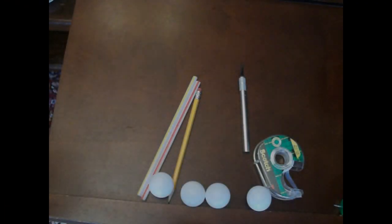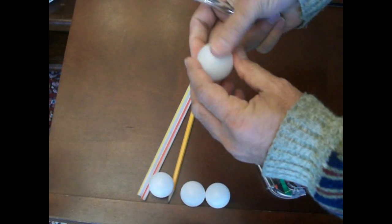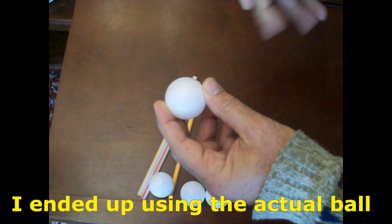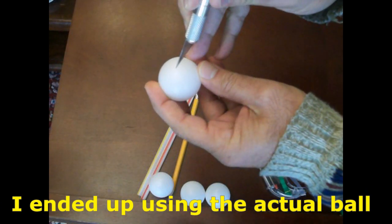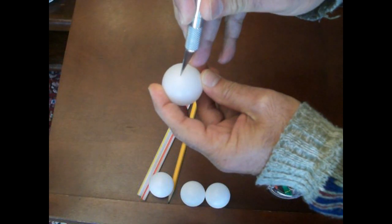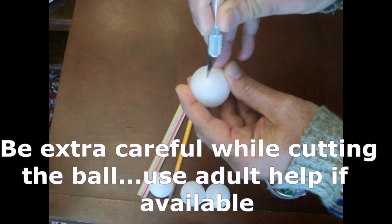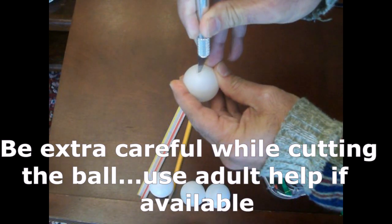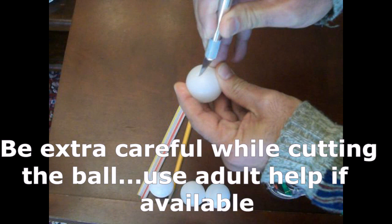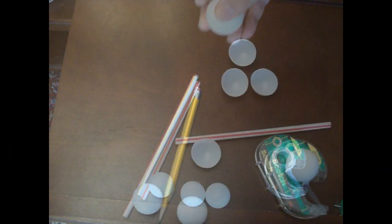Let's begin the construction of the four cup anemometer. For this, I'm going to be cutting this ping pong ball. It's not exactly a ping pong ball, it's a plastic ball slightly smaller than a ping pong ball, but I'm going to cut it.